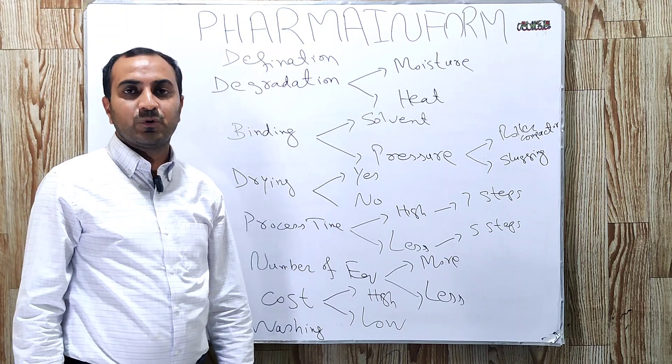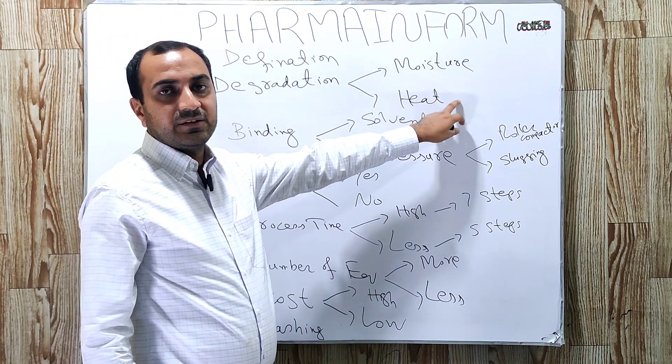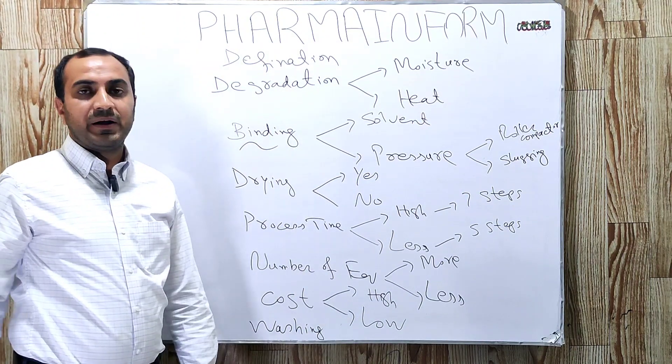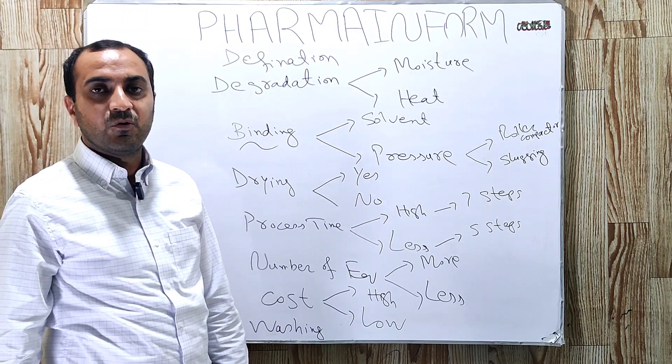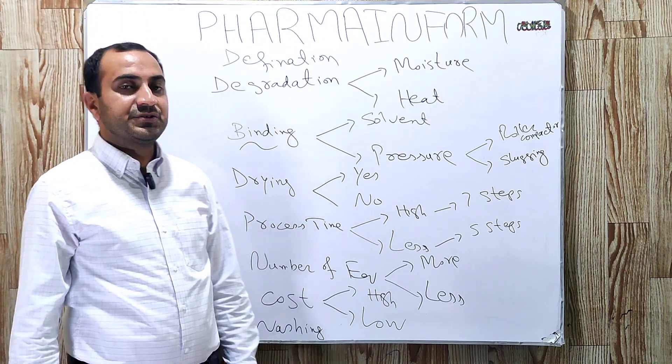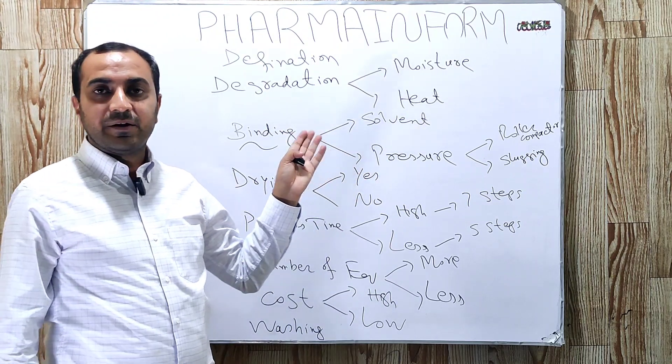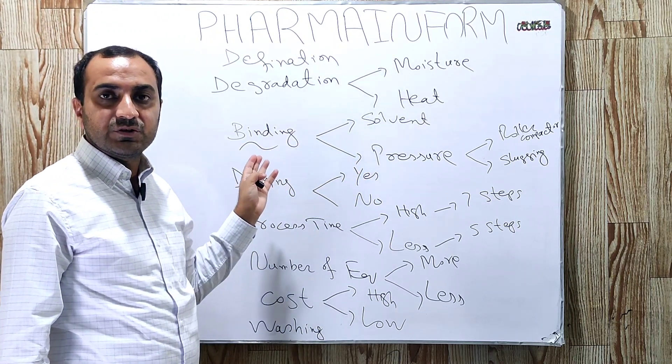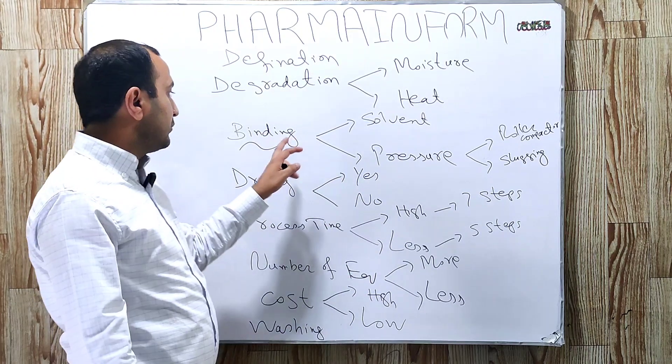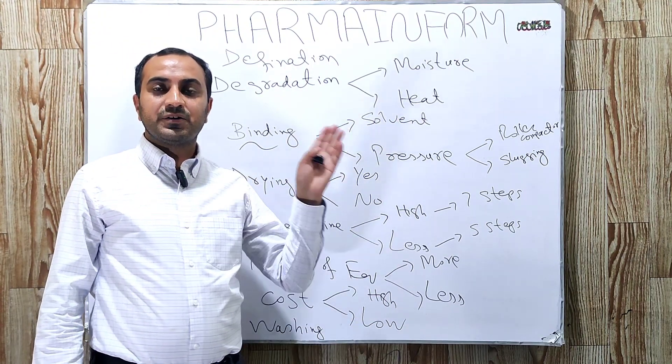The next one is binding capacity or binding agent. As we discussed in the definition, we use solvent or binder solution in wet granulation. In wet granulation, to give strong bindings to the particles to form granules, this method provides strong binding through the binder solution.